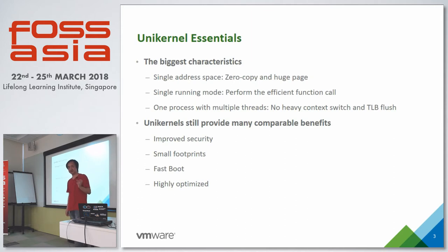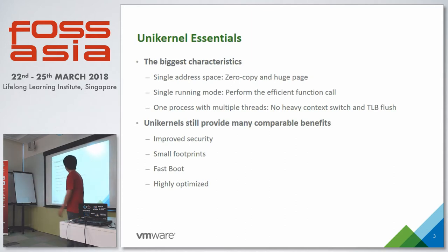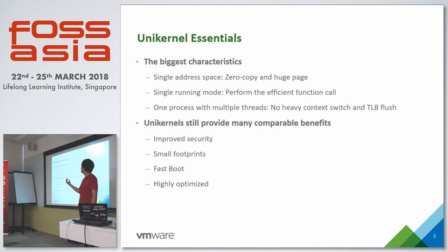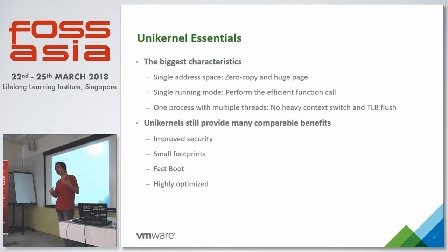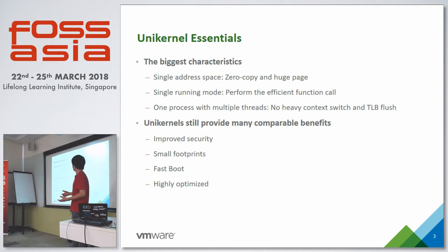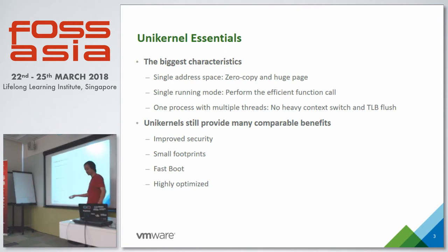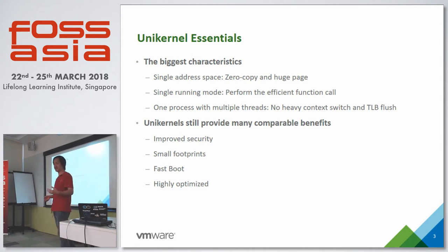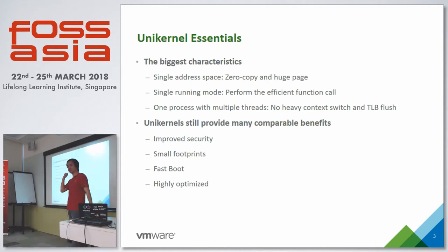Thinking about that definition, I think Unikernel has these characteristics. Single-address-space means we can do zero-copy and allocate huge pages. Single running mode means we don't need heavyweight system calls - instead we can use function calls. And most of the time we just run one process, maybe with multiple threads. This means we don't need a heavyweight context switch - for example on x86 we don't need to reload CR3.